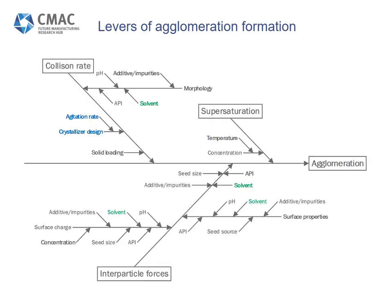Based on this mechanism, we can identify the levers of process parameters which govern agglomerate formation. The work I'm going to talk about today will focus on inter-particle forces through solvent selection, and collision rate through crystallizer design and agitation rate.